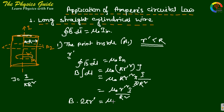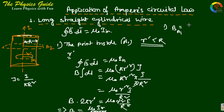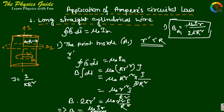The integration of dl gives 2 pi r-dash, so B times 2 pi r-dash equals mu-naught r-dash squared I over R squared. Solving for B, this gives B at a1 equals mu-naught I r-dash over 2 pi capital R squared. This is the magnitude of the magnetic field at point a1 inside the wire.